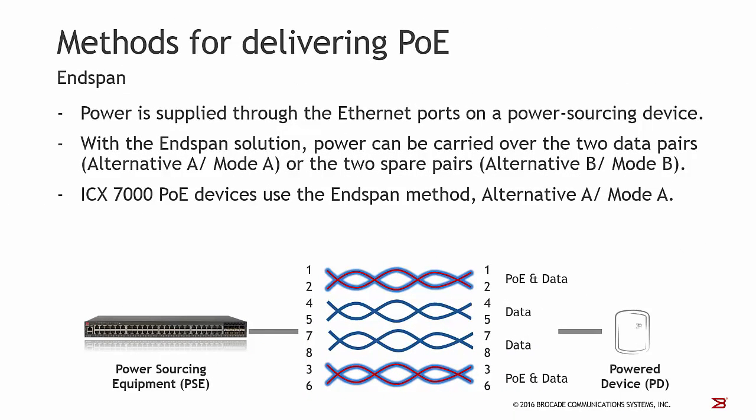The second method is called Endspan, where power is supplied through the Ethernet ports on a power sourcing device directly. Endspan supports two modes: Alternative B or Mode B, just covered in the Midspan technology, and Alternative A or Mode A, where power can be carried over the two data pairs of wires. Mode A is also supported on all ICX 7000 PoE devices.